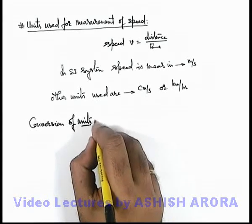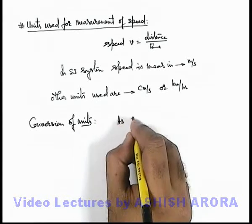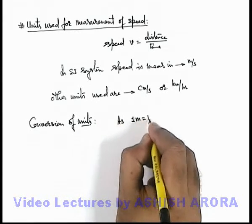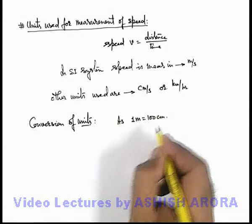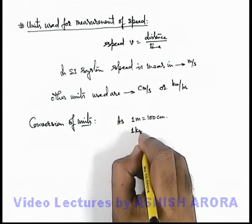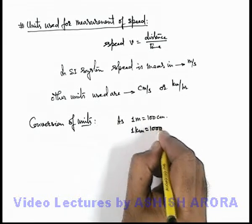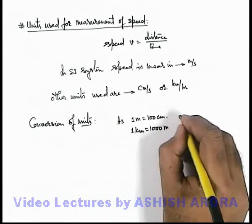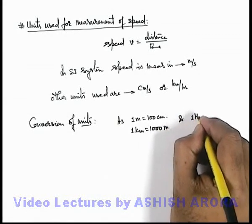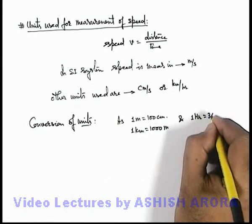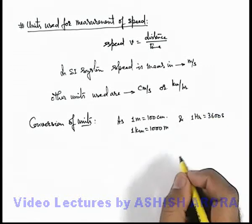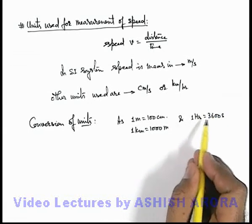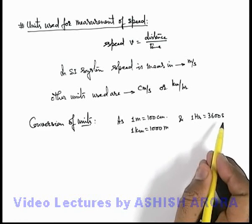In conversion you can use 1 meter is equal to hundred centimeter, and 1 kilometer is equal to thousand meters. As well as for time, we can use 1 hour is equal to 3600 seconds, because 1 hour consists of 60 minutes and each minute consists of 60 seconds.